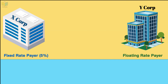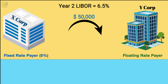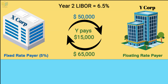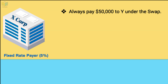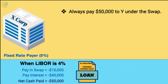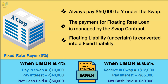If during the second settlement period the LIBOR becomes 6.5%, X has to pay $50,000 to Y, and Y has to pay $65,000 to X. This can also be netted, and Y will pay $15,000 to X. Let us take a moment to understand the cash flow for both parties. This scenario is favourable for X, as it is able to save $15,000 in bank interest. Under this swap contract, X will always owe $50,000 to Y, and is thus able to convert an uncertain liability into a fixed amount of expense.